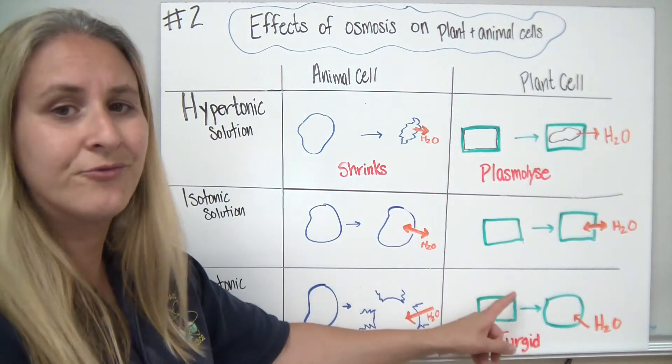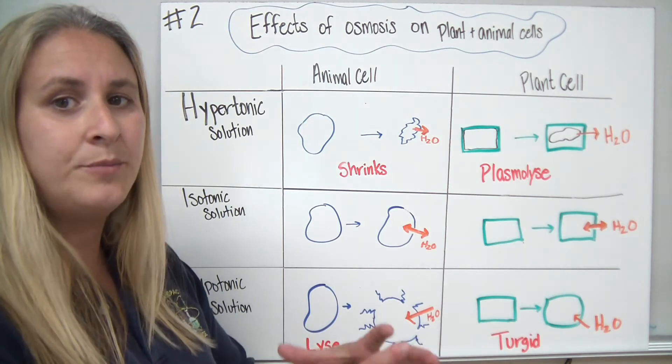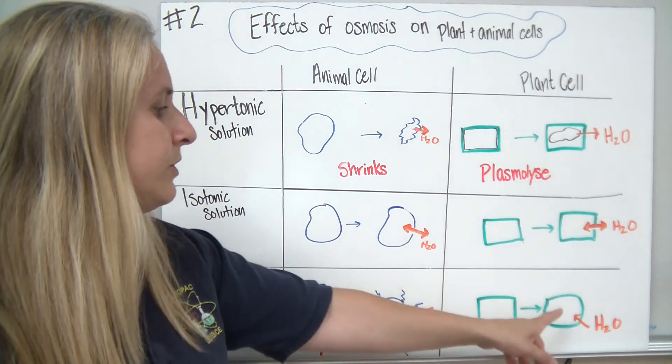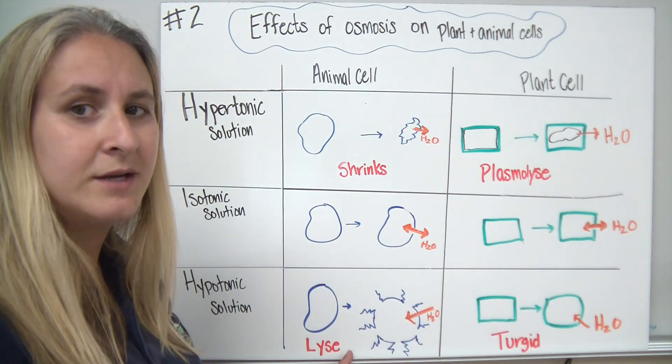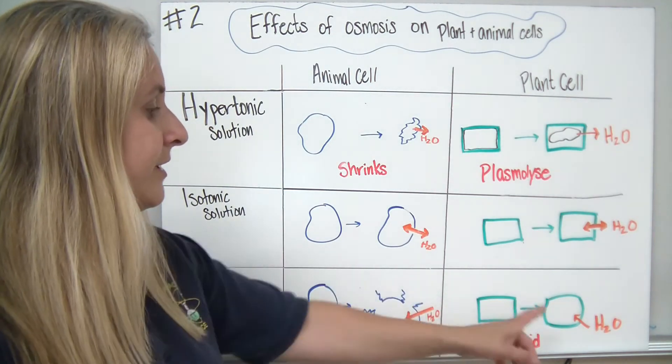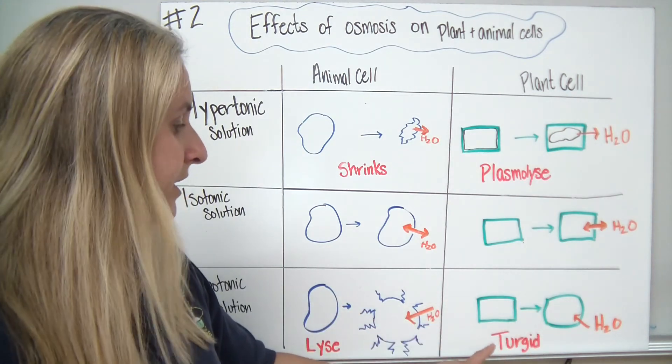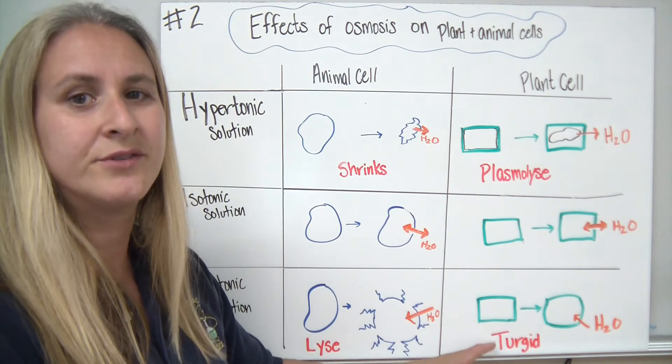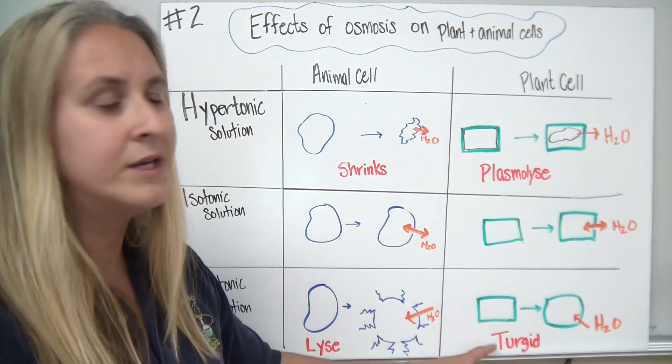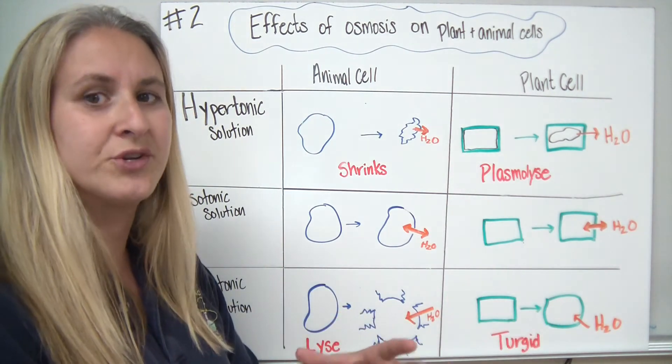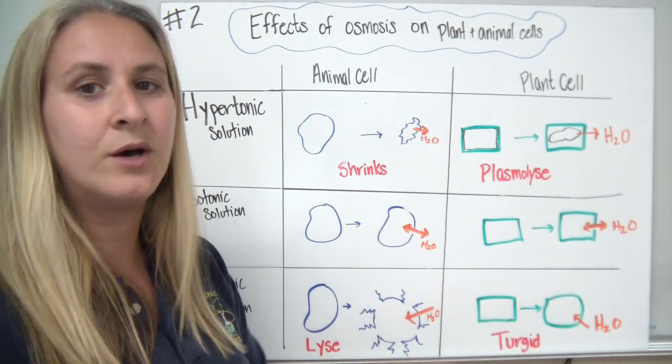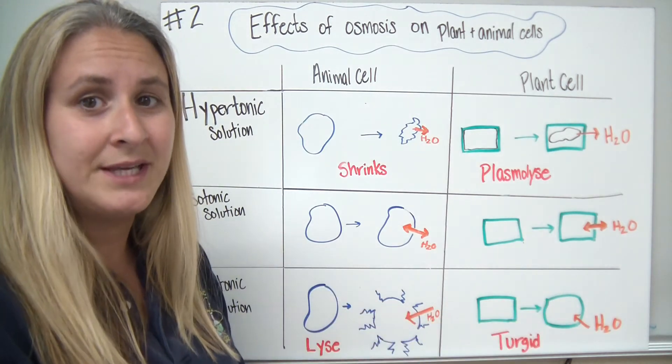In a plant cell, with that rigid cell wall, it will become firmer and firmer and firmer and won't usually explode or lyse like an animal cell will because of that rigid cell wall. As it becomes fuller and fuller, we use the term turgid. Some people pronounce it turgid. We call that turgor pressure. As the water comes into the cell, it creates pressure on that cell wall and it also does help it to keep its shape.